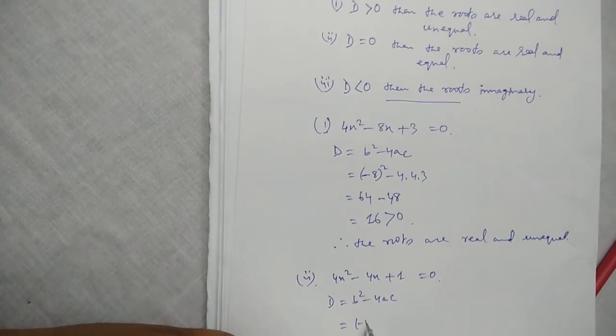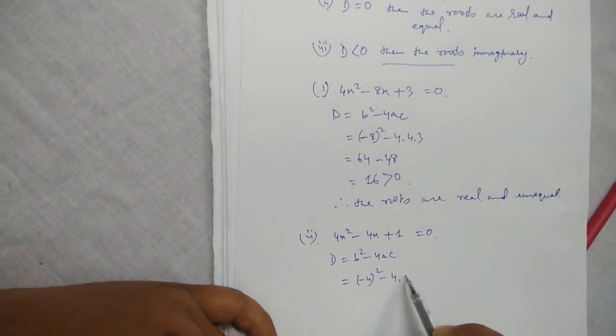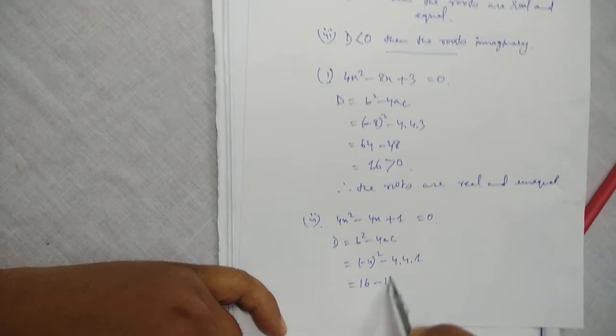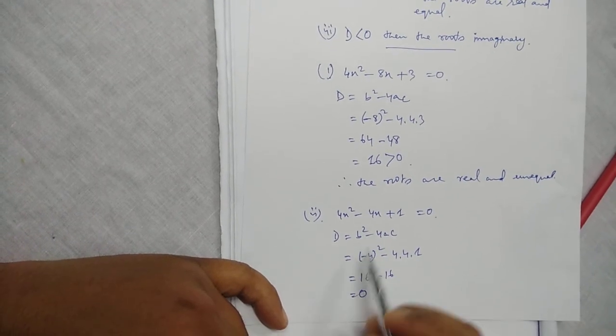Here, the value of b is minus 4 square, minus 4 into 4 into 1. This is 16 minus 16, equal to 0. So in this case, D equals 0.